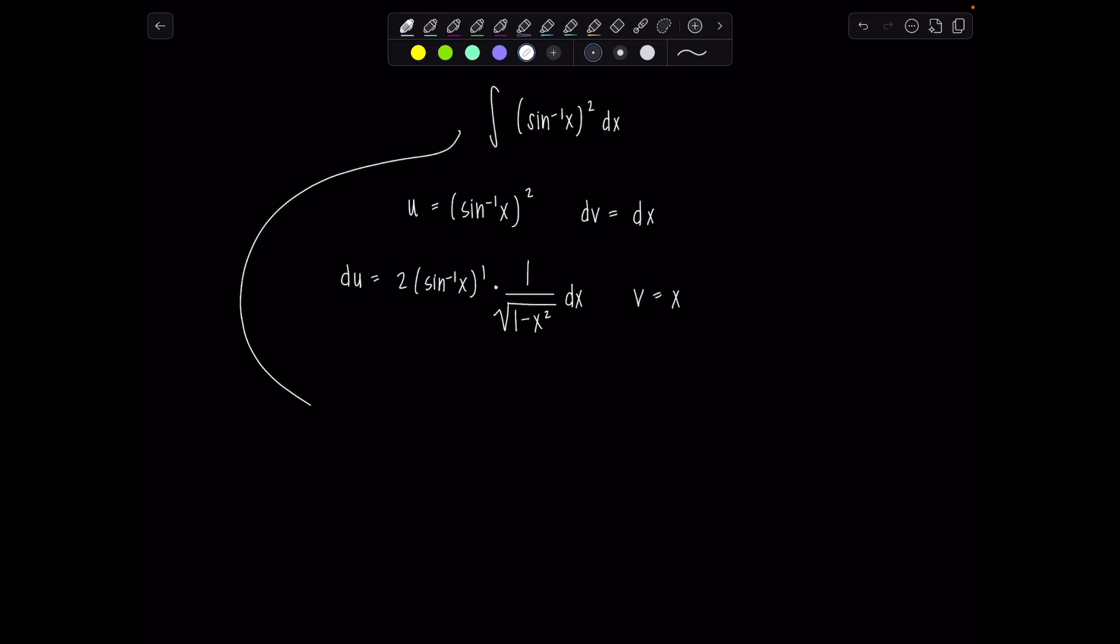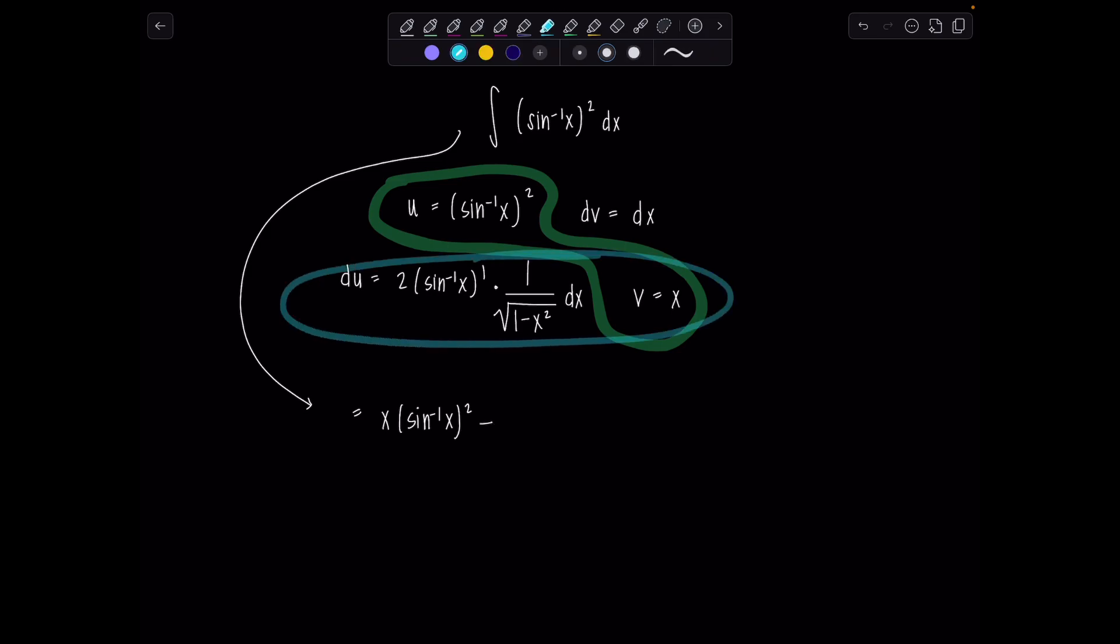So now let's use our bi-parts formula and see what we've got going on. Remember we have u times v so that'll be x times sine inverse of x squared minus the integral of v du. So I'm going to put the two outside the integral sign and then let's write it nicely so it doesn't look like a disaster. I'll put x sine inverse of x up top with dx and then the rad one minus x squared in the bottom. So x sine inverse of x over rad one minus x squared dx.